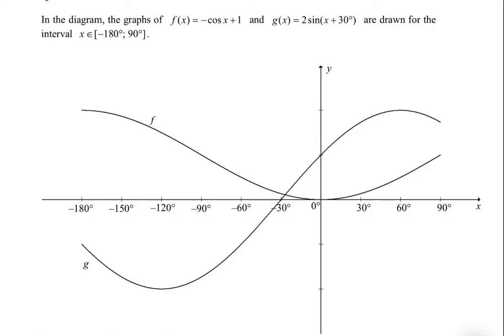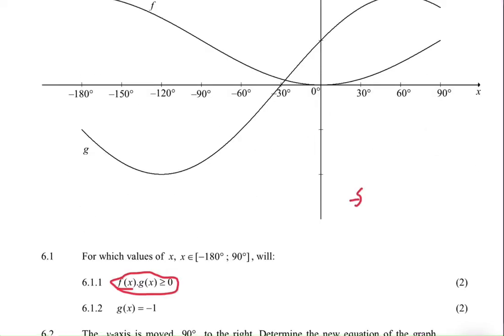We always have to resort to looking at the graph. So here, if f(x) multiplied by g(x) is greater than zero, then f(x) needs to be positive and g(x) needs to be positive.